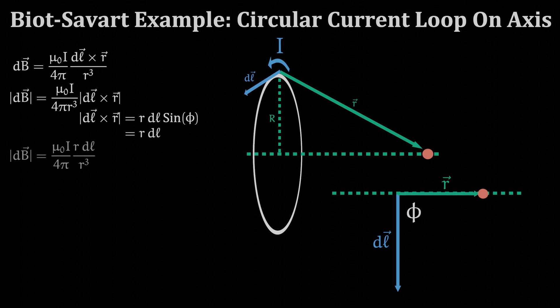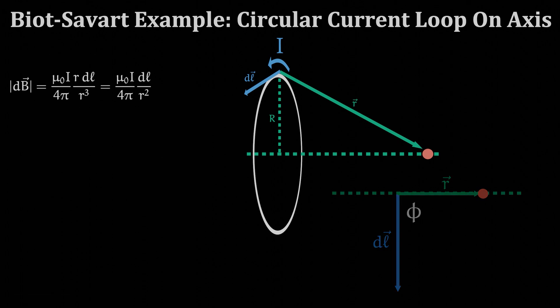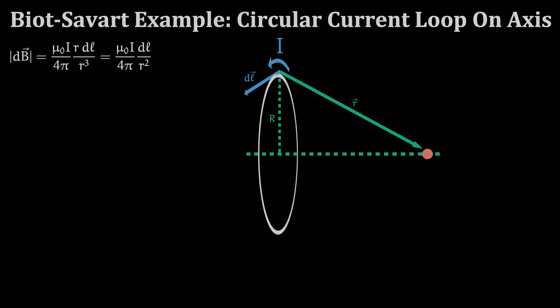Now let's rotate the current loop so that we are seeing it edge on and only keep track of the two points at the very top and bottom of the loop. The top portion of our loop has a vector dl coming out of the page which we denote with this circle with a dot inside. And on the bottom point we have a vector dl pointing into the page so we denote that with this symbol.